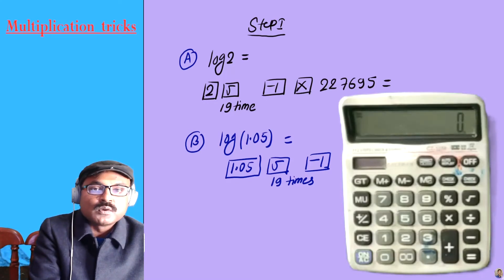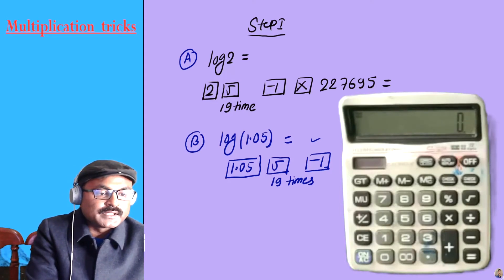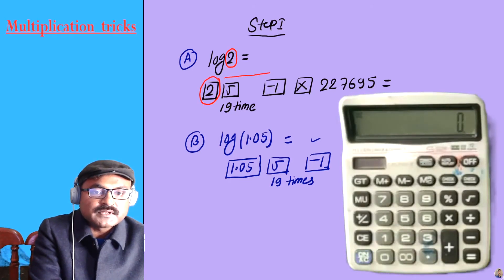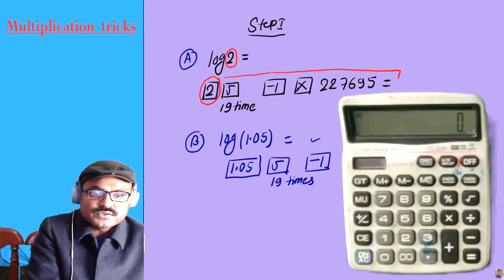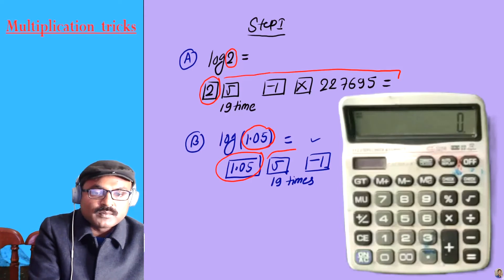Log 1.05 — this is a common step. First find the value of log 1.05, place the remaining steps. It is a common step: log 1.05 first, then the common step value.